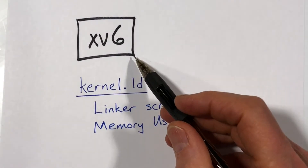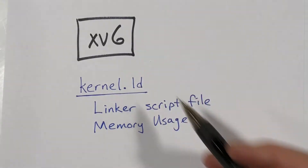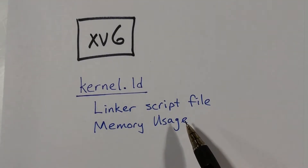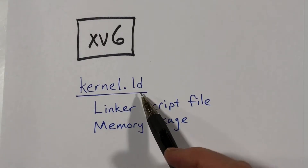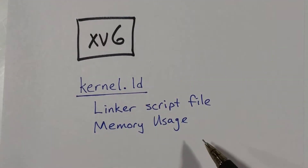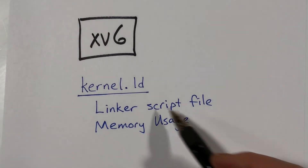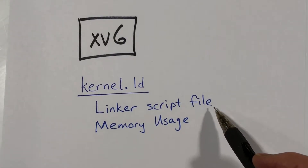This video is part of a series on the XV6 operating system kernel. In this video I'm going to talk about the linking of the object files to produce the image file. I'm going to talk about the file kernel.ld. This is not a C program and not an assembly program — instead it is a linker script file which gives commands to the linker to tell how to put things in memory.